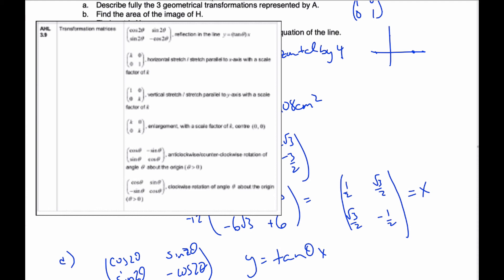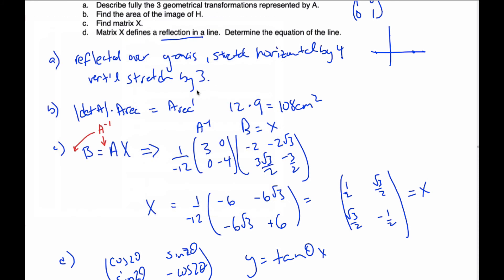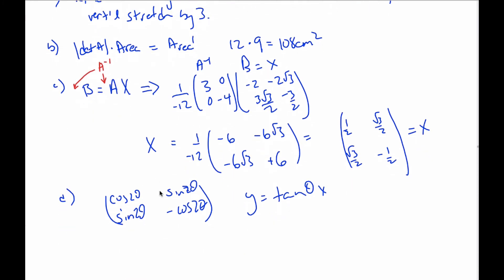So, based upon that, what I can do is I have to recognize that this value here is cosine 2θ, sine 2θ, sine 2θ, negative cosine 2θ. So, I can just simply say that cosine 2θ is equal to 1/2.